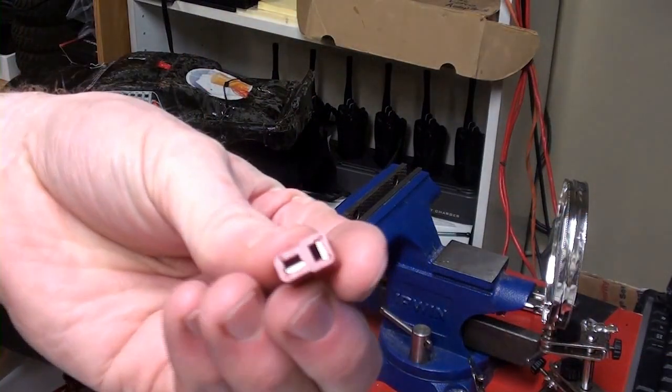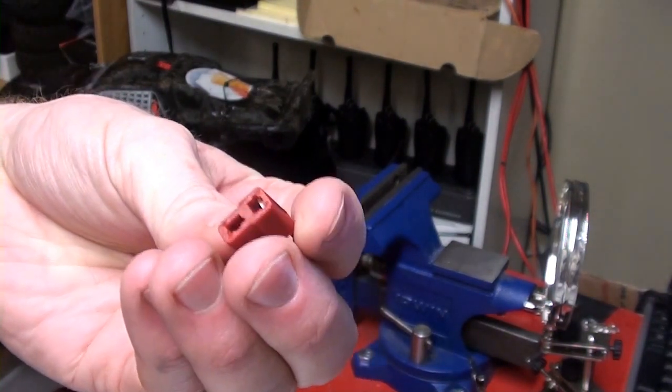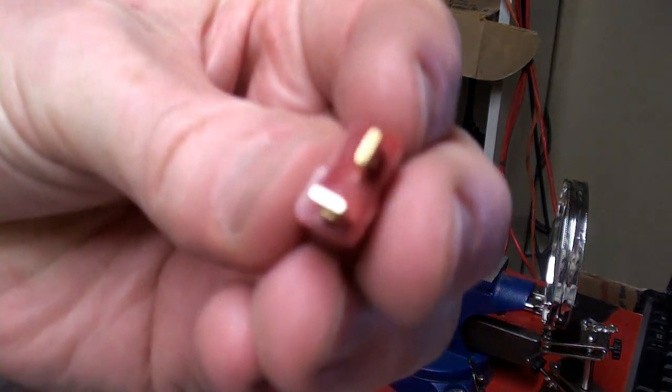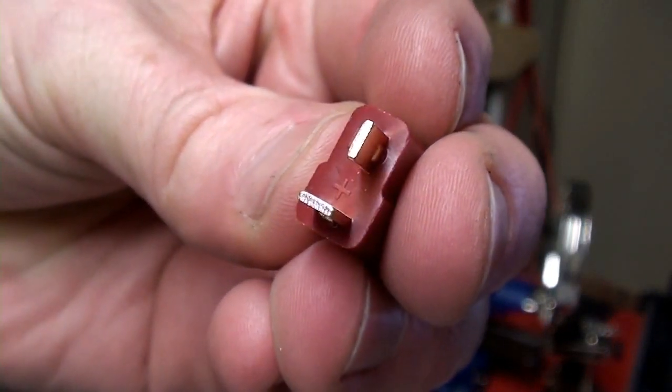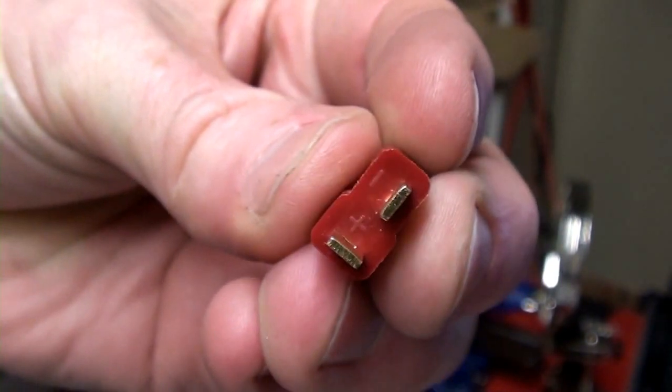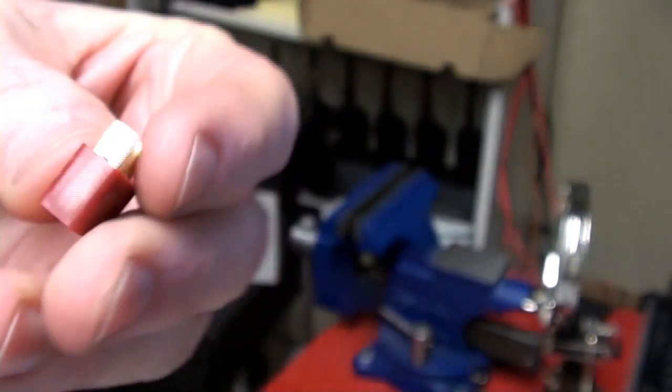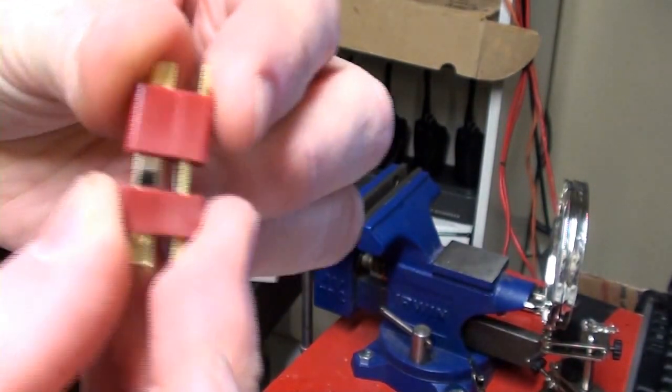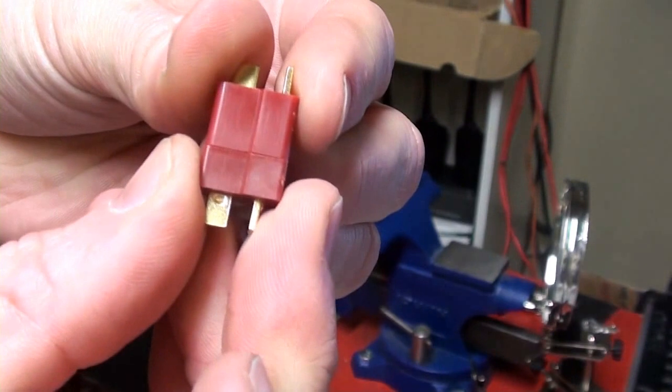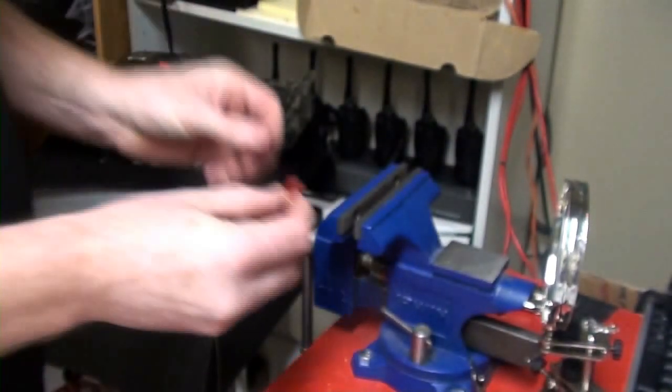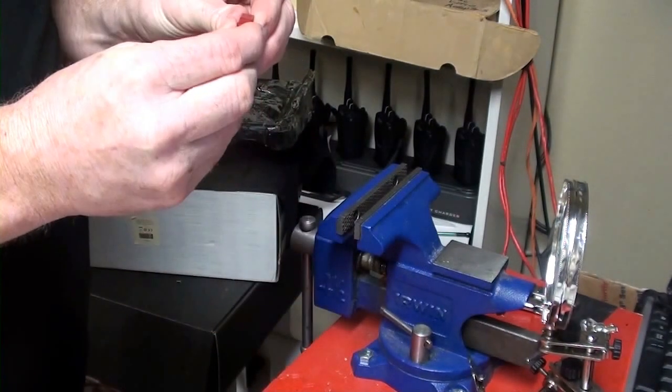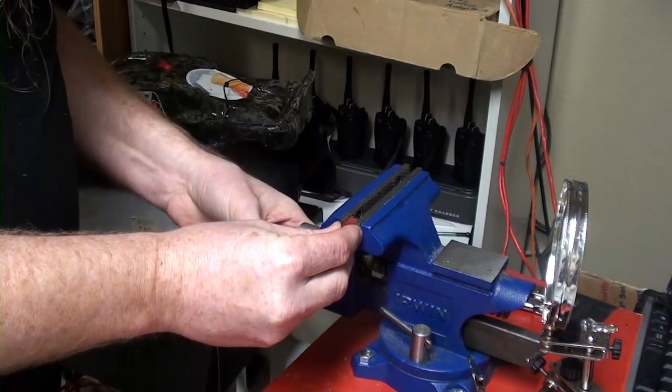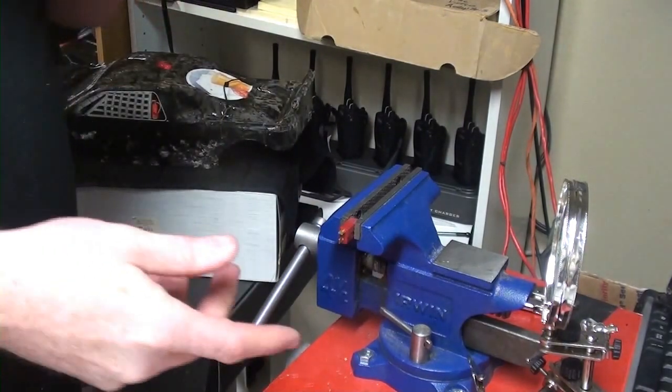So this is my Dean's connector. This is the end that's going to go on the battery and if you look at this side, you can actually see that it's labeled plus and minus for which pins are which. Now to make my soldering easier, I'm going to go ahead and plug it into its reciprocal connector. I'm going to take it and plug the reciprocal connector in the vice. That way there's no pressure on the piece that I'm heating up.